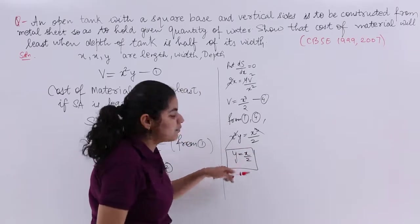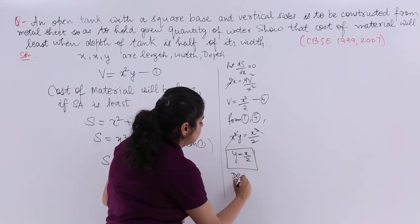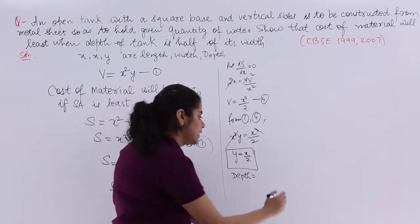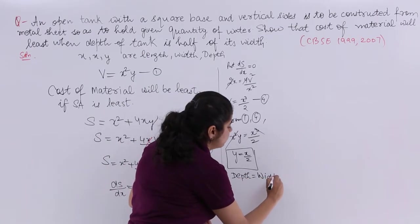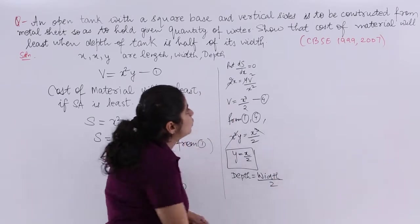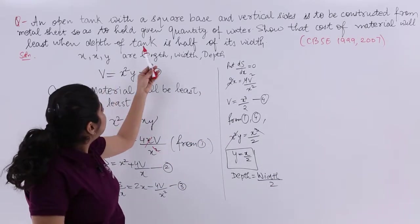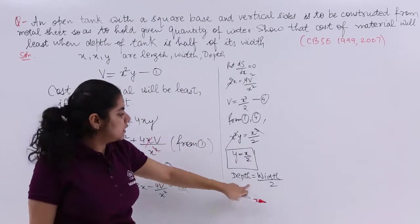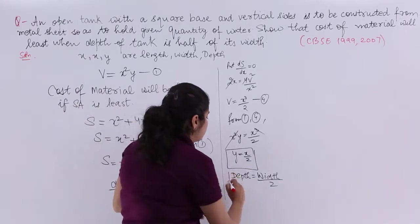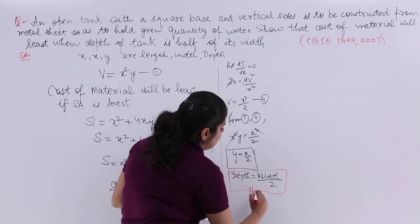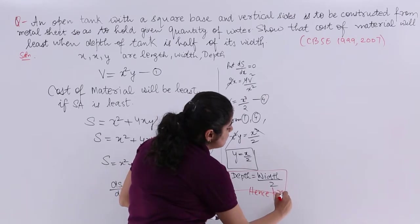See, y was your what? It was depth. x is what? It is width or length. So y = x/2. See what we needed to prove: depth of the tank is half of its width. Depth is half of its width. So hence proved. So one part is done, but is it the answer?